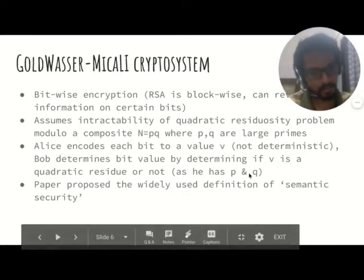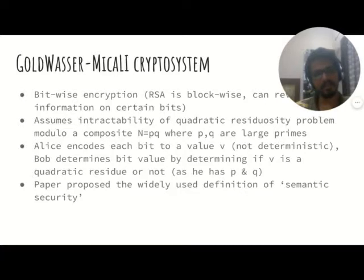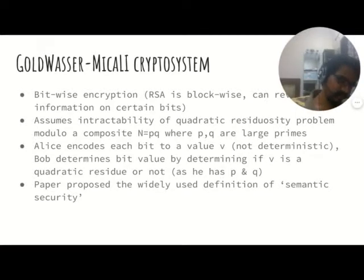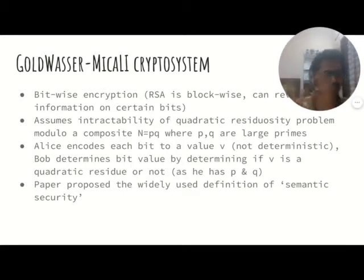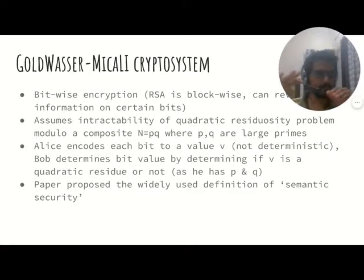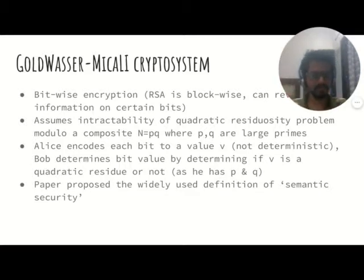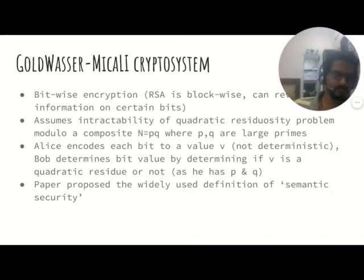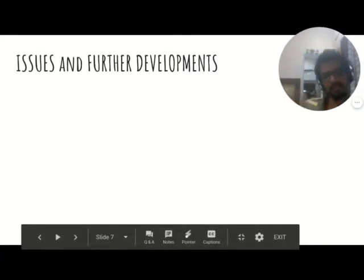One idea proposed in this paper is a notion of semantic security — a formal definition of how secure an encryption algorithm is. Given two plaintexts and a ciphertext that is the encryption of one of them, an adversary should not be able to guess with higher than 50% probability which plaintext the ciphertext belongs to. In other words, using the ciphertext, you cannot infer anything significant about the plaintext. The Goldwasser-Micali algorithm is semantically secure.